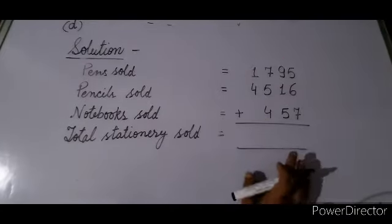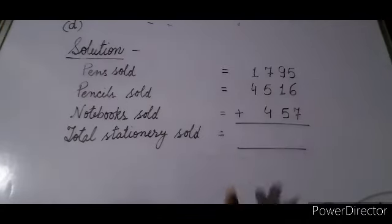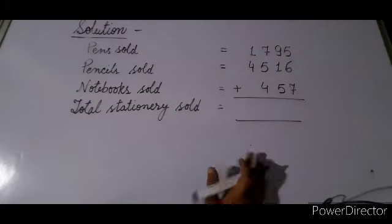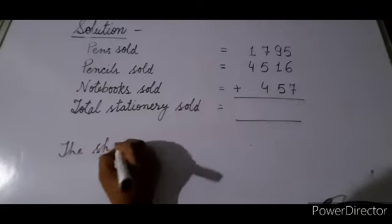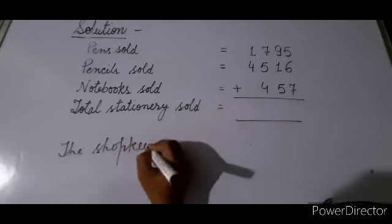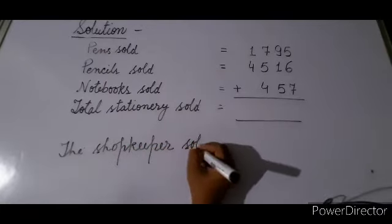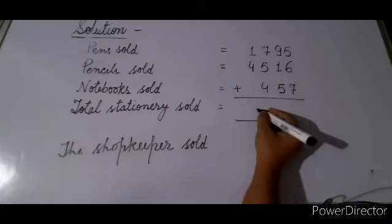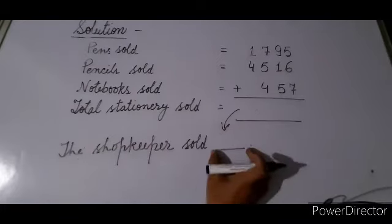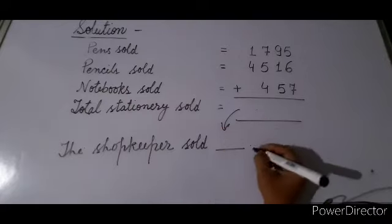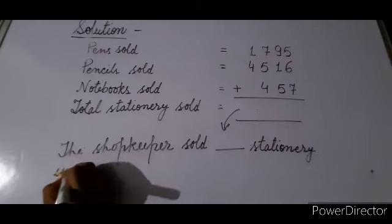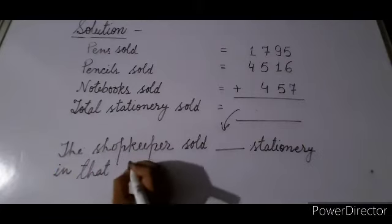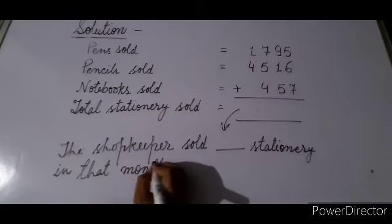Add the three numbers and tell me the answer. After adding, write the answer line: 'The shopkeeper sold [answer] in that month.' Write whatever answer comes from the addition.